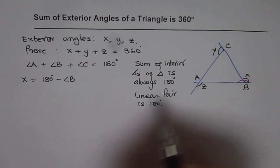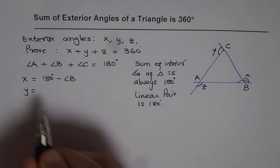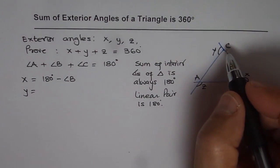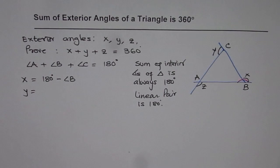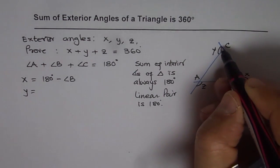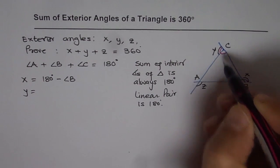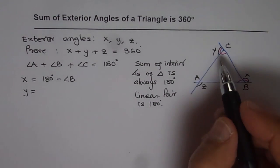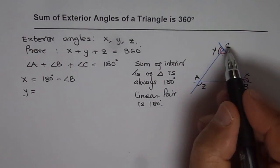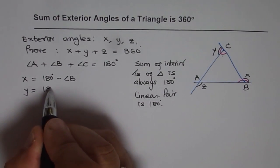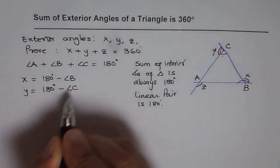Similarly, y is equal to, if you see this angle, it is linear pair, right? 180 degrees, where this angle is angle C, right? So it is 180 degrees minus angle C.